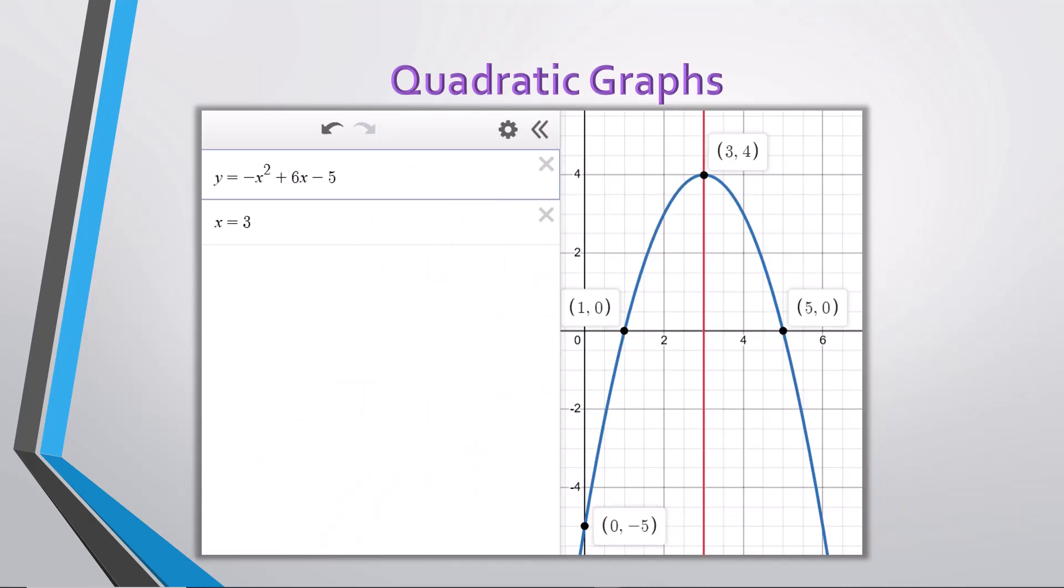First, let's examine the equation for this graph. We're looking at the full Desmos view, complete with the equation negative x squared plus 6x minus 5, and the equation for the axis of symmetry, x equals 3. We can tell this just by looking at the graph, seeing the vertex point 3, 4, and the line crossing the vertex and x-axis at 3.